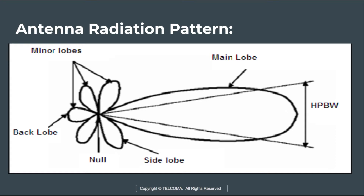The side lobes represent a source of interference in the communication link, and this is why they are generally required to be of low level. The main lobe consists of the main power, and some power is also radiated in the backward direction of the antenna. Side lobes are an intrinsic property of antenna radiation and cannot be completely eliminated, but they can be minimized with proper antenna design to reduce defects.